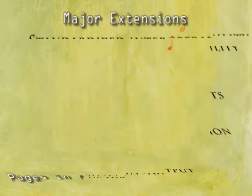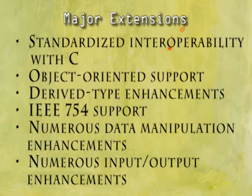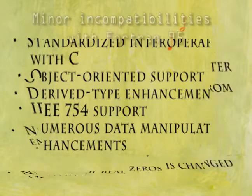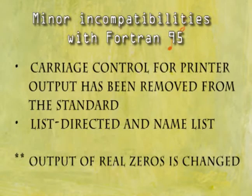The major extensions in Fortran include: standardized interoperability with C, object-oriented support, derived type enhancements, IEEE 754 support, numerous data manipulation enhancements, and numerous input/output enhancements.